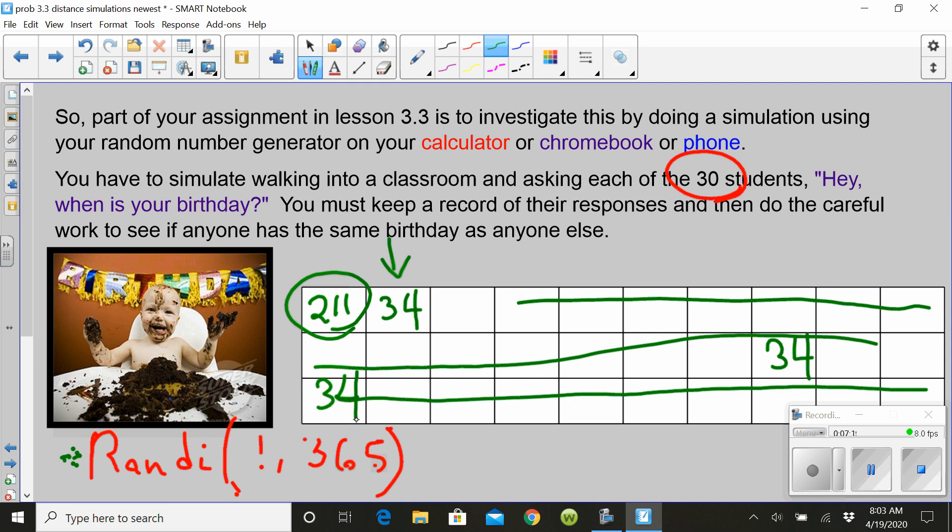I want you to do the experiment, and you're going to do this twice. You're going to generate the 30 birthdays and check and see, look very carefully, take a couple minutes to analyze that and see if anybody has the same birthday as anybody else. And then you're going to repeat that process a second time for another classroom of 30 students and see if they have common birthdays.